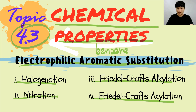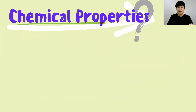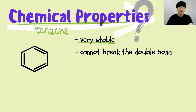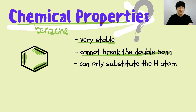First and foremost, let's look at the chemical properties of benzene. Benzene is very stable, and because it's very stable you cannot break the double bond easily. This is the pi bond, or double bond, in the benzene ring. Because you cannot break the double bond easily, the part of benzene that will undergo reaction is the hydrogen atom — you can only substitute the hydrogen atom.